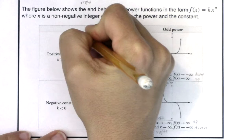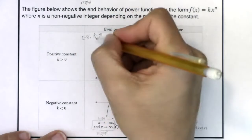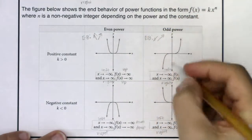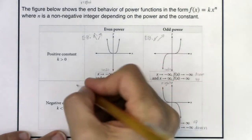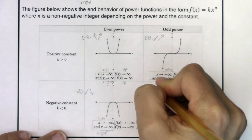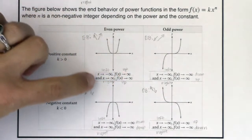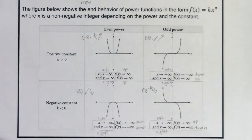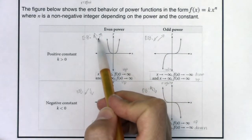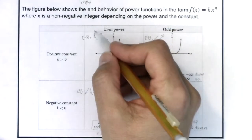Sometimes I'll shortcut this. For end behavior, if I have a positive coefficient and an even power, you might just see me write two arrows up. For odd power with positive coefficient, that's down on the left and up on the right. For negative even, it's down down. For negative odd, it's up down. You'll see me use words, calculus infinity symbols, or just arrows.